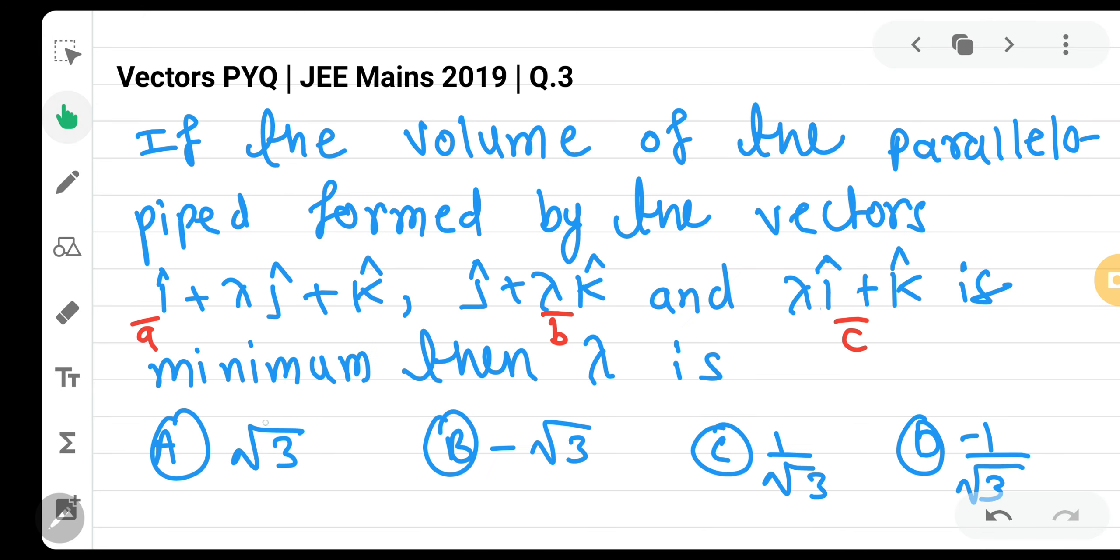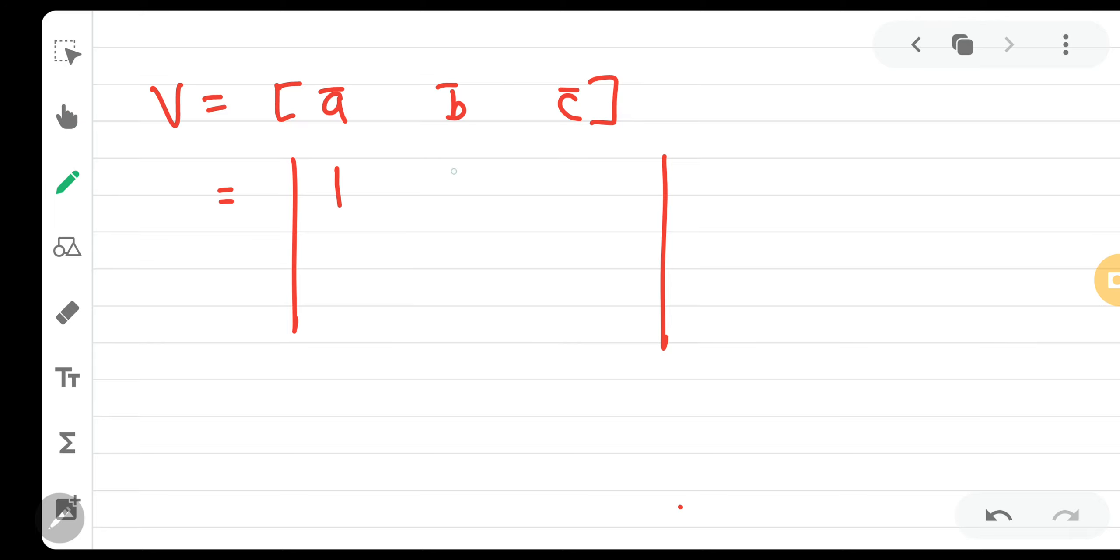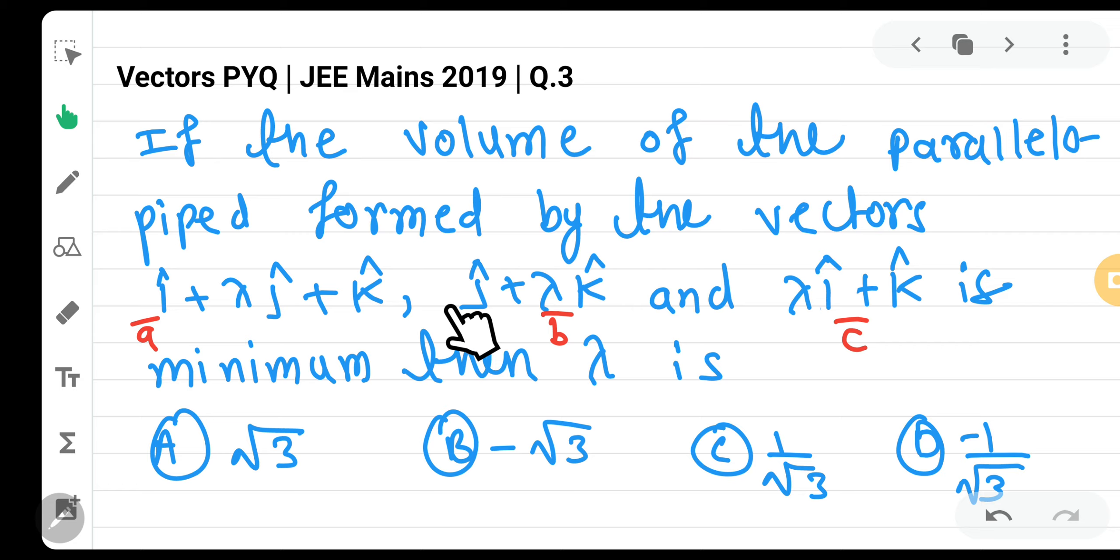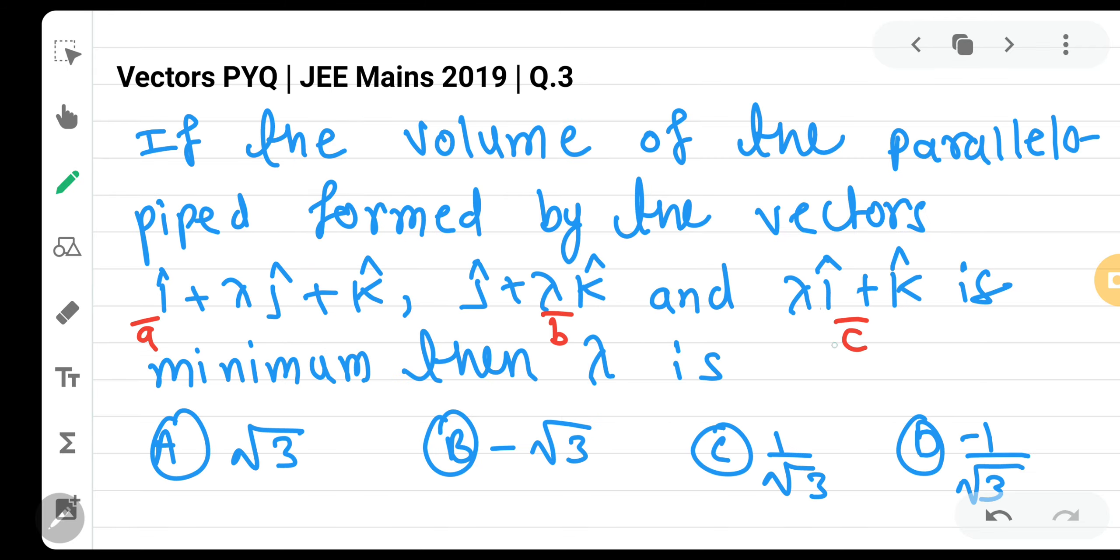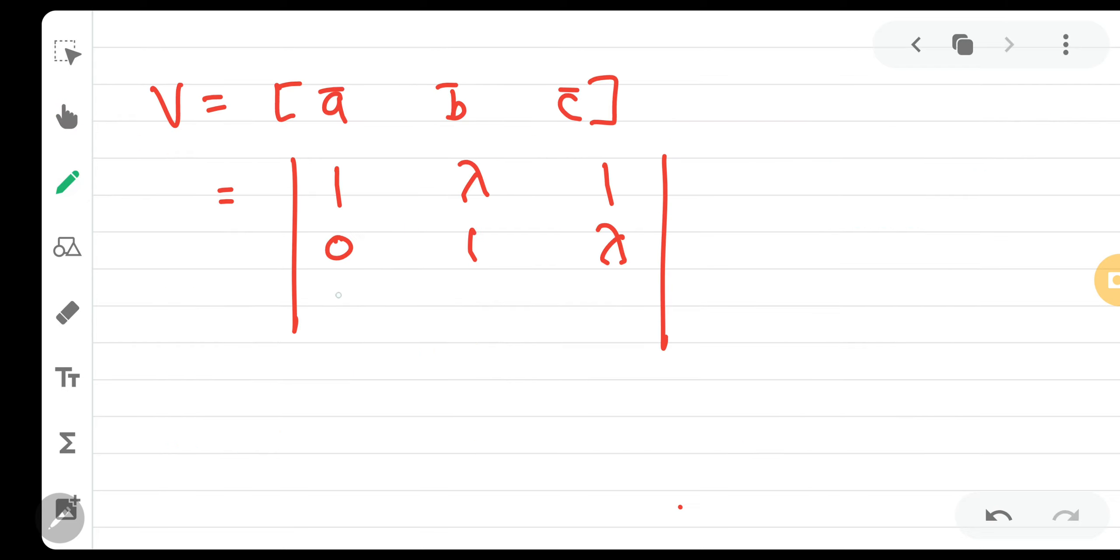What is A bar? 1, lambda, 1. All coefficients we will write. 1, lambda, 1. Then B bar, there's no i cap, so it will be 0. J cap is 1. K cap coefficient is lambda, so 0, 1, lambda. And C bar: lambda, 0, 1.